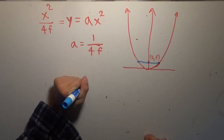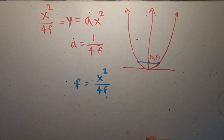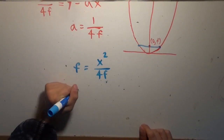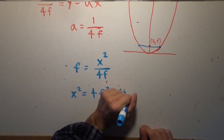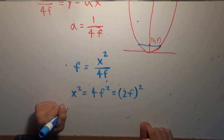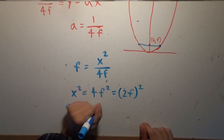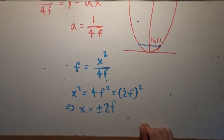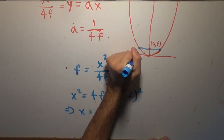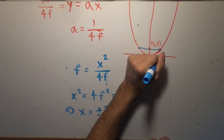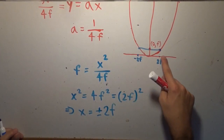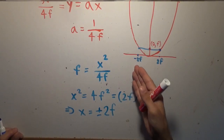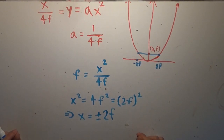So this point here is negative 2f, and this point here is positive 2f. Whatever integral we're going to do to get the arc length of the parabola, we're going to be doing it from negative 2f to positive 2f. We just need a couple more concepts.